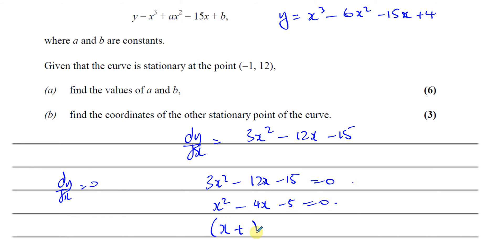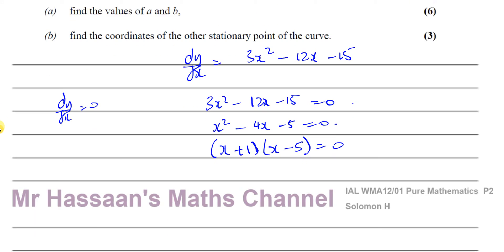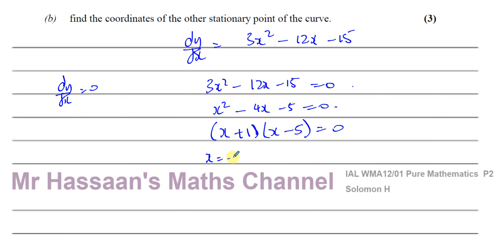We already know that one of the factors must be x plus 1, because x equals minus 1 is a stationary point. So it's easy to see the other factor must be x minus 5. Expanding: x squared minus 5x plus x minus 5 — that's correct. So our two solutions are x equals minus 1 and x equals 5. This second one is the other stationary point we're looking for, the one that isn't minus 1.